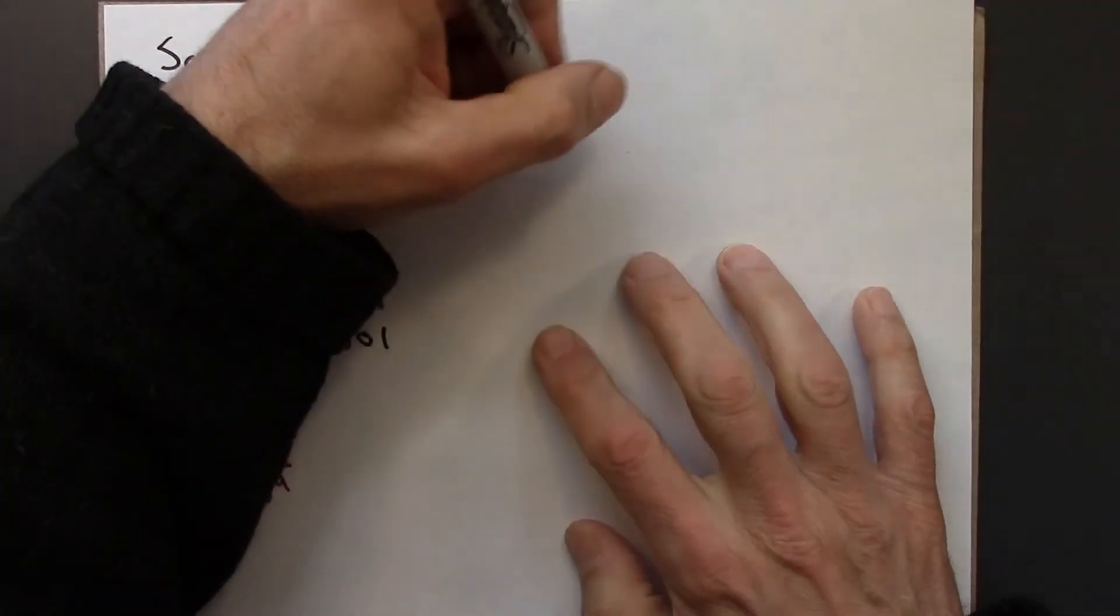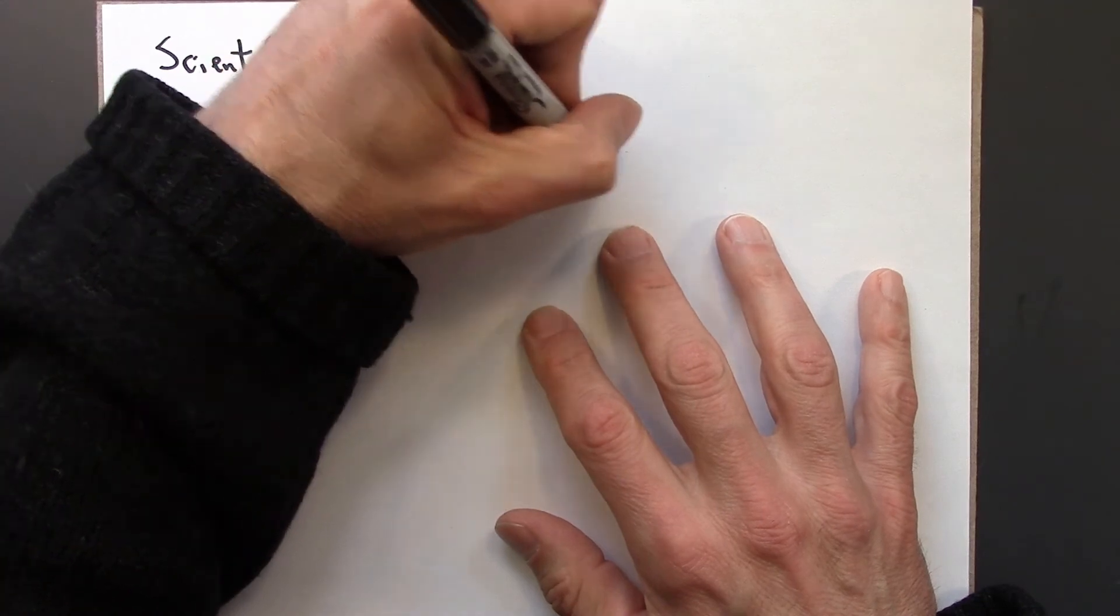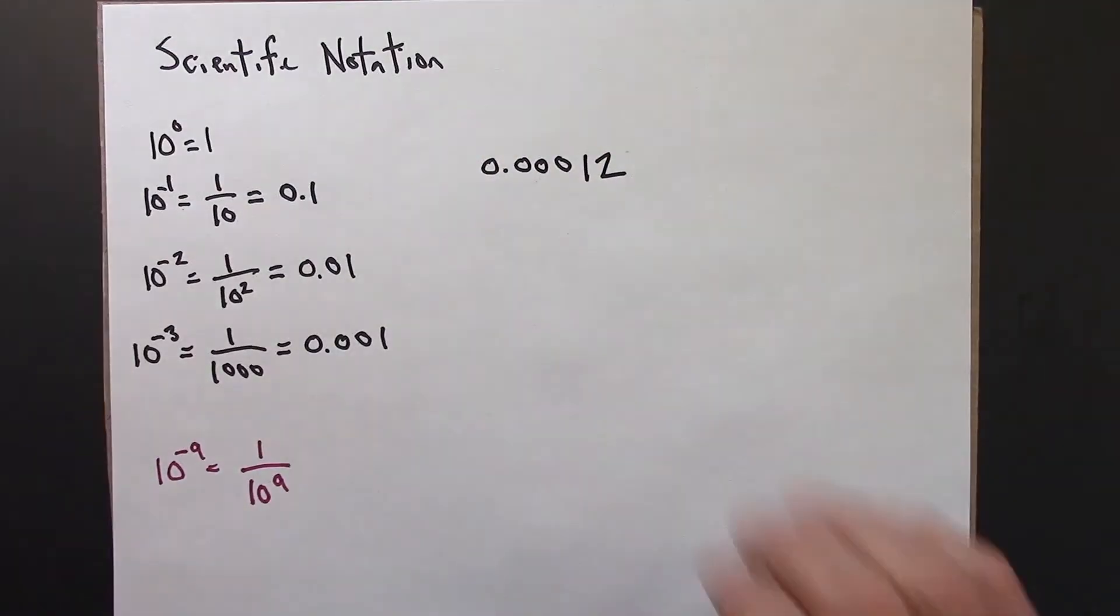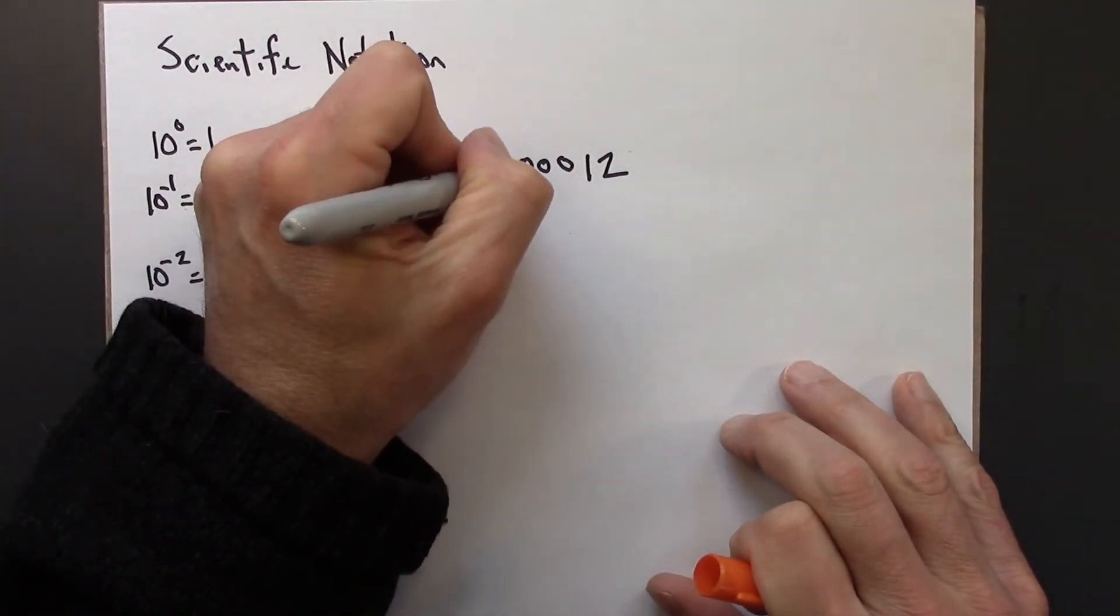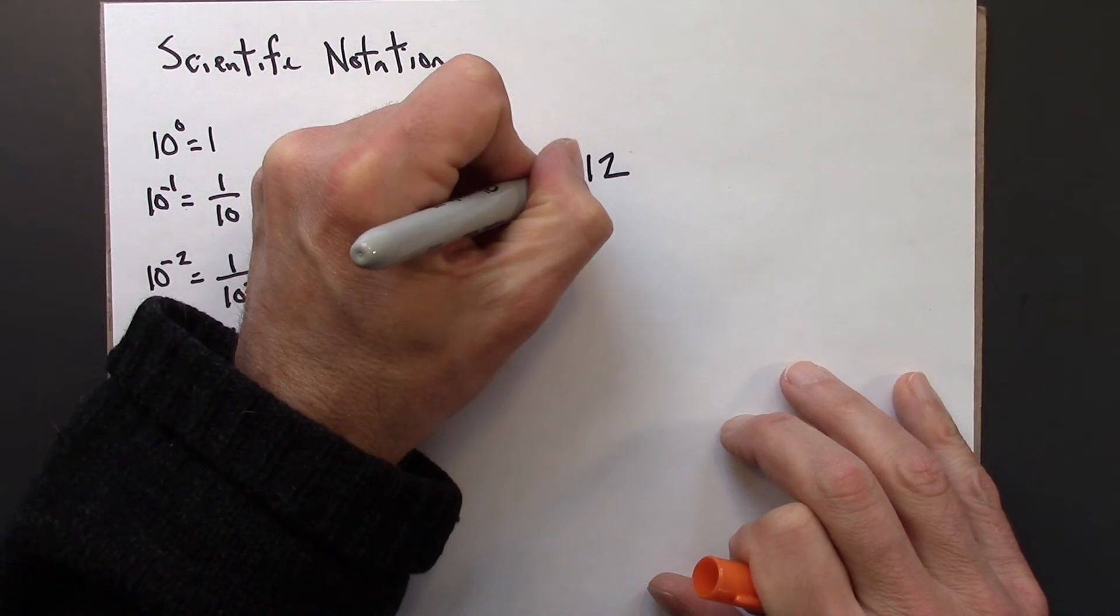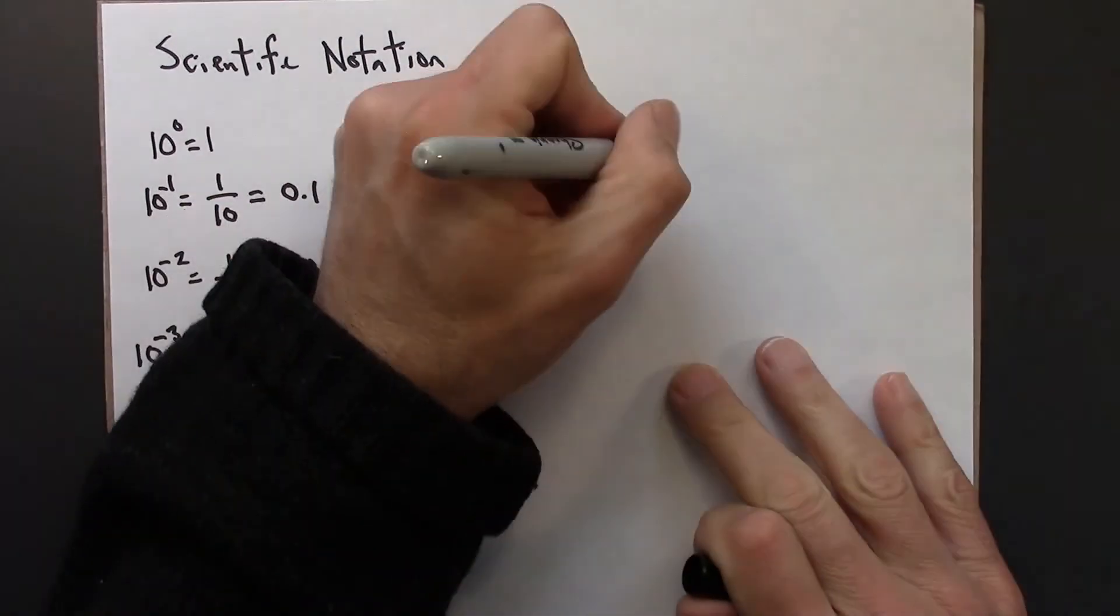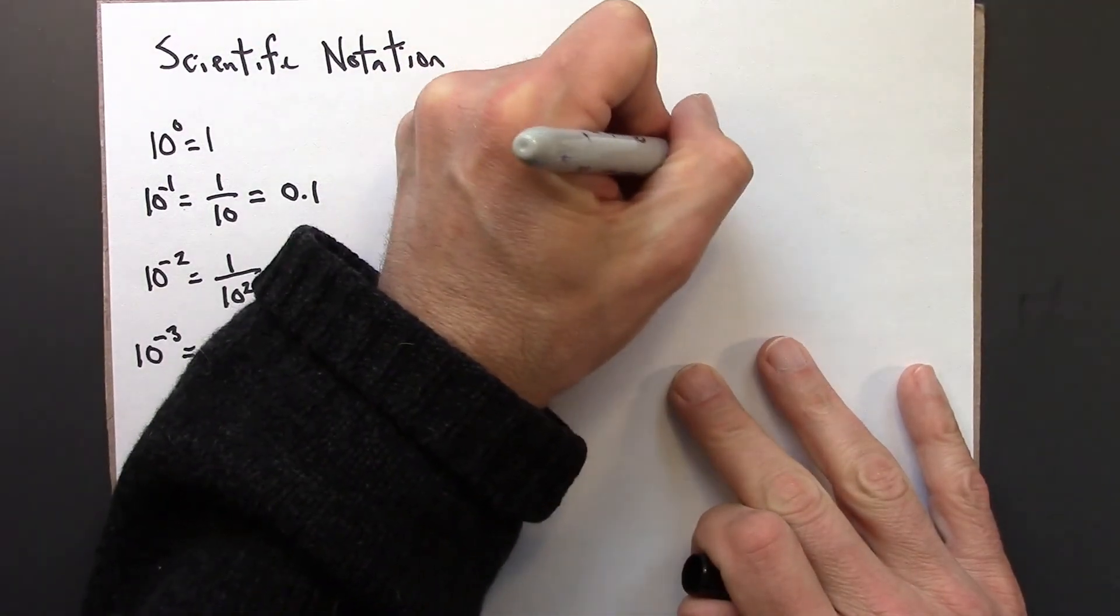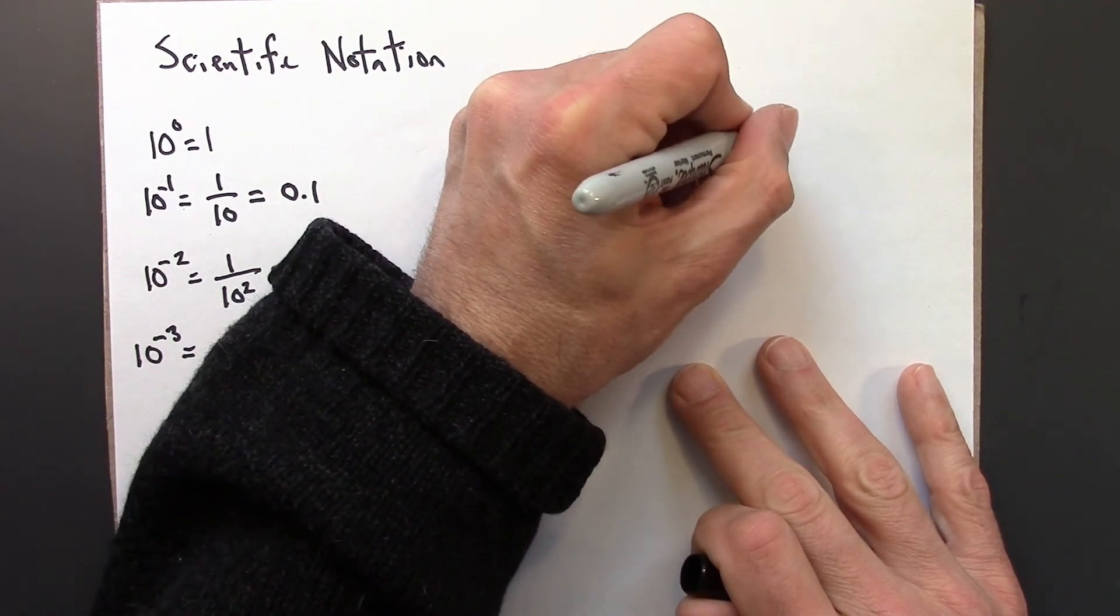So let's do an example. 0.00012. How would I write that in scientific notation? Let's see. So I start here. I go over 1, 2, 3, 4. So I'm going 4 to the right of the decimal. So that's 1.2 times 10 to the minus 4.